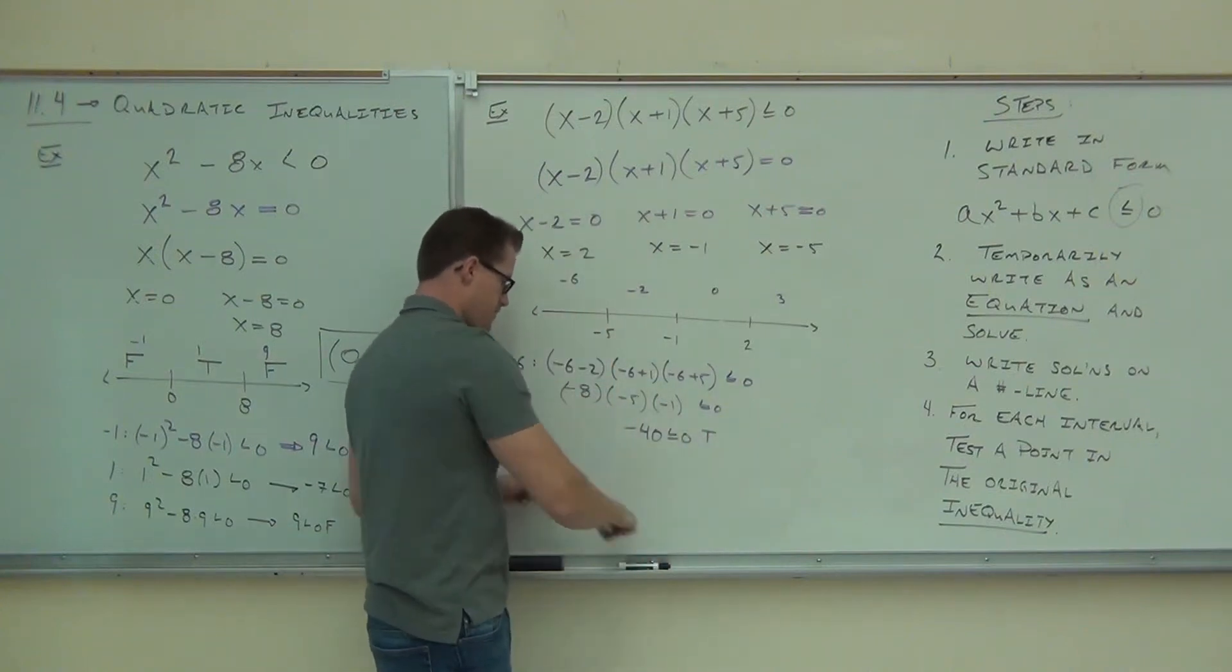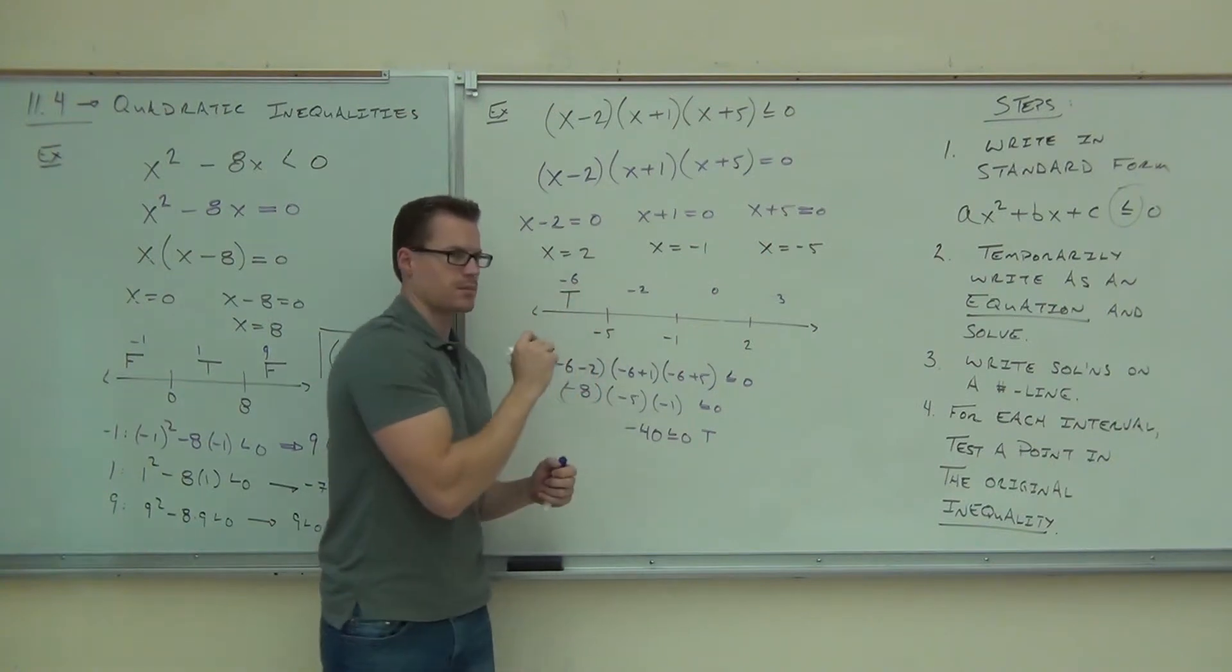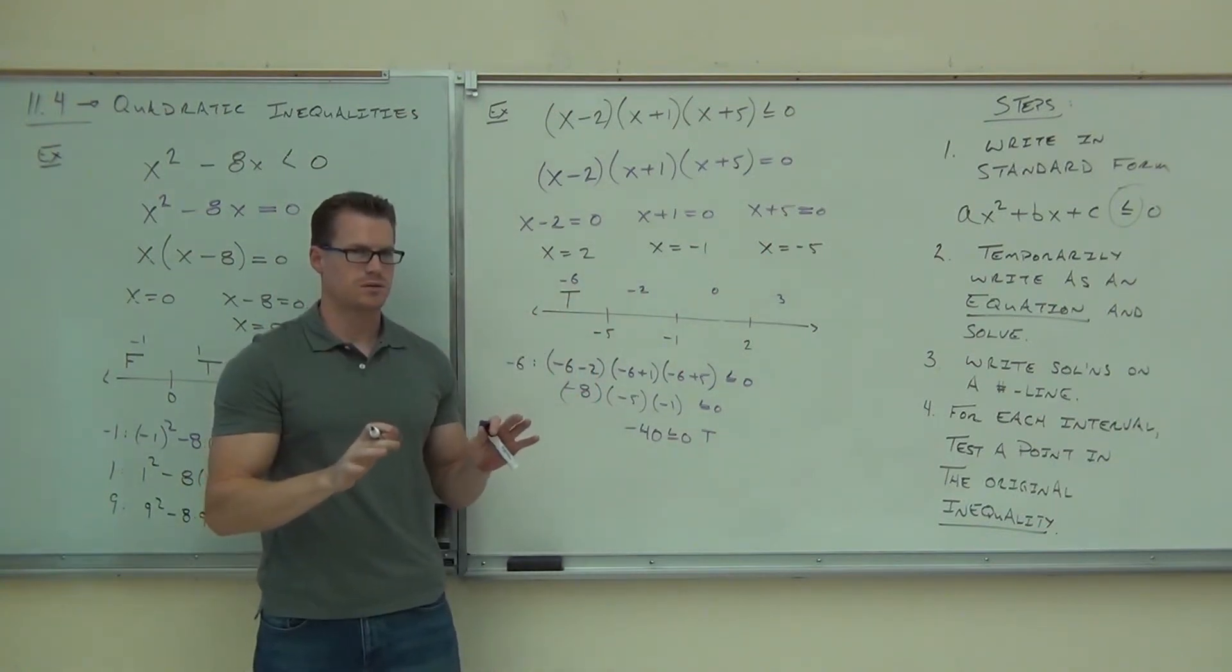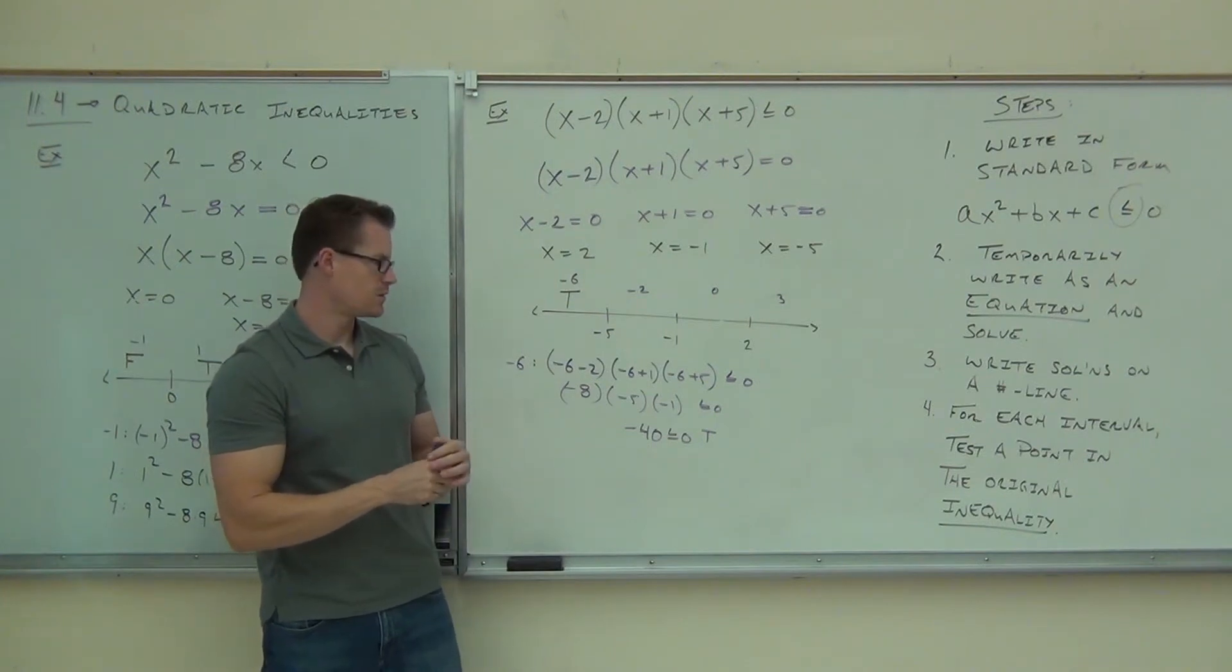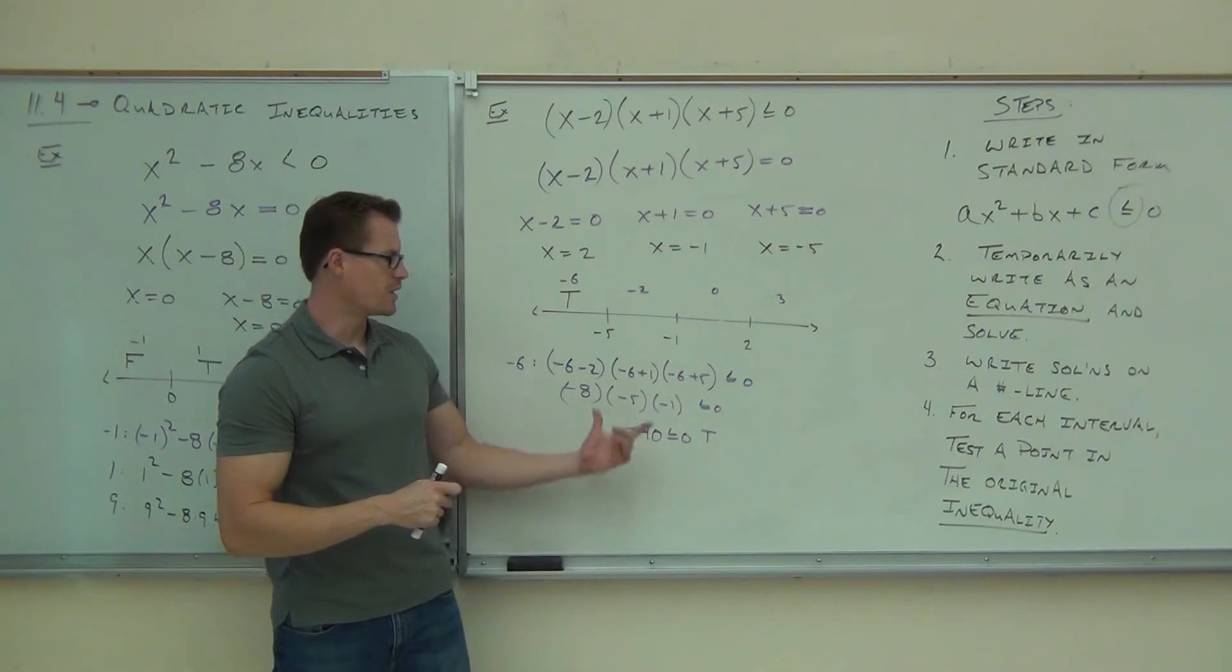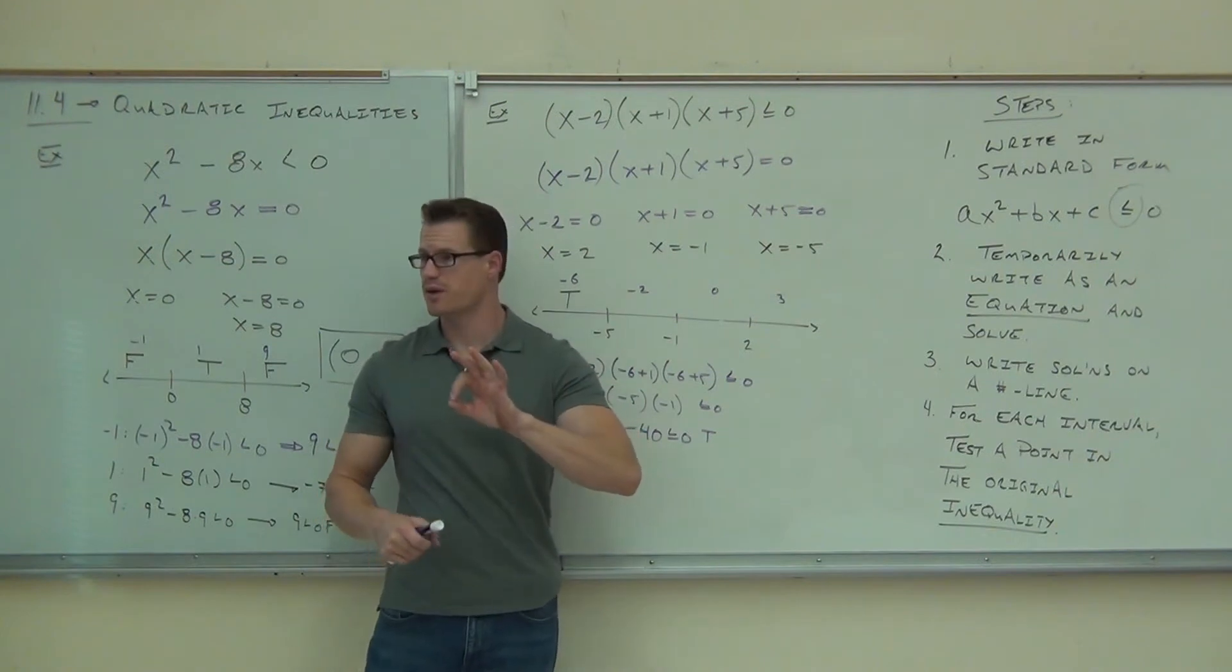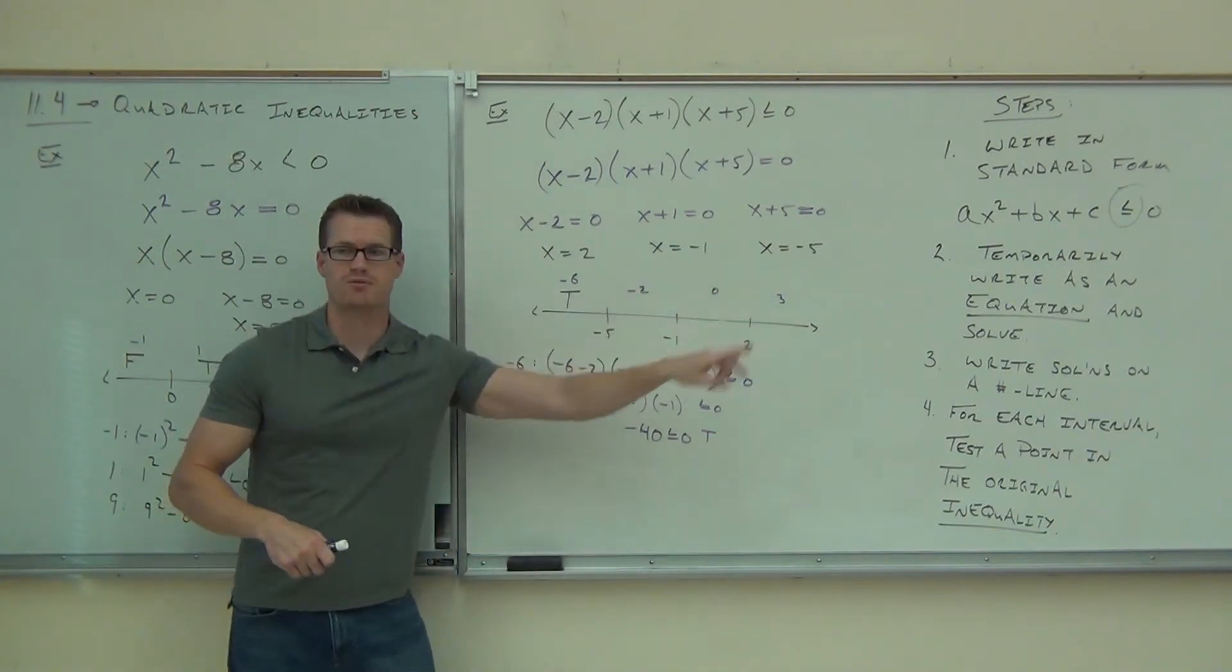So you get a true statement out of that. Do you see where those numbers came from? Negative 6 plus negative 2 is negative 8. Then negative 8, negative 5, negative 1 - we multiply those things because we are multiplying. You're going to get negative 40. That, of course, is less than 0. That makes a true statement for the interval. Check the remaining three of them for me, okay?